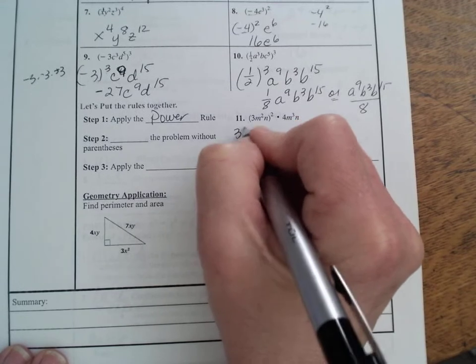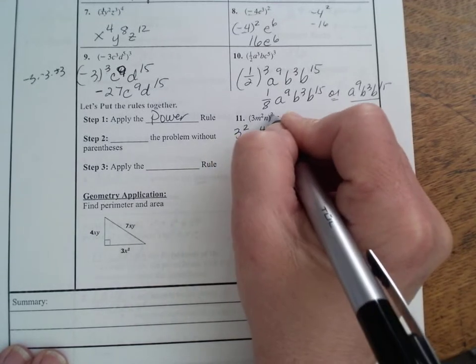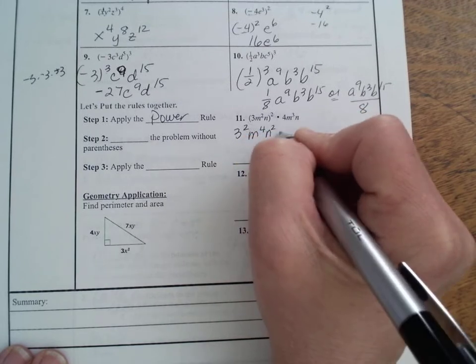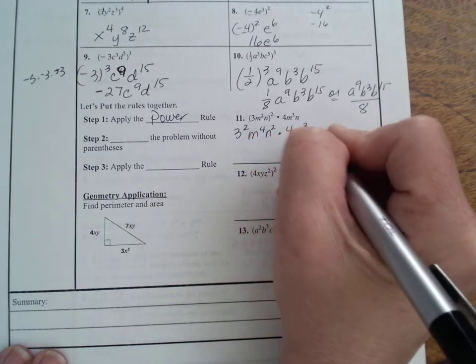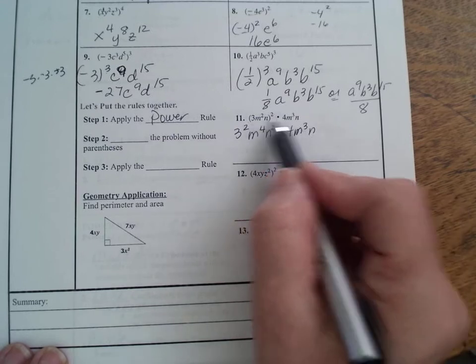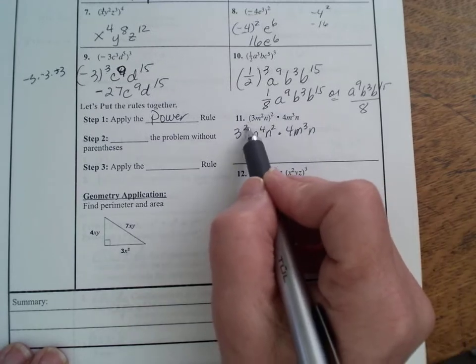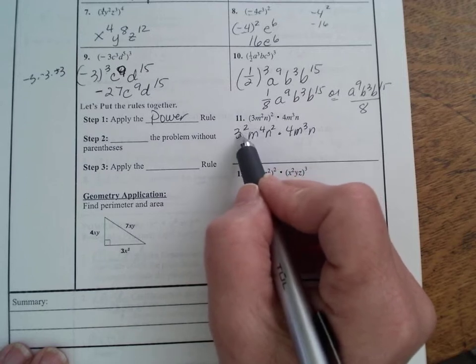So again, you're saying 3 squared, and then m 2 times 2, n squared, times 4m cubed n. I always like to rewrite, bring everything down to one line so I can see everything. Now from here, I would go ahead and simplify the 3 squared.